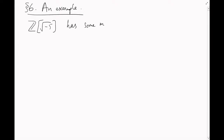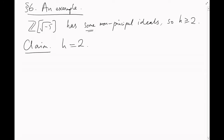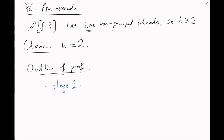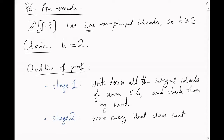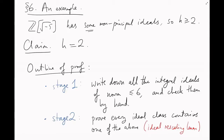Section 6: An example. We know already that Z[√(−5)] has some non-principal ideals, so it contains at least two ideal classes — principal and non-principal — but we don't know how many. I'm going to prove that there are actually only two. The proof has two stages: in the first stage I'll use what we learned in the previous video to write down all the integral ideals with small norm — let's say norm at most 6 — and check by hand which ones are in the same class. Then in the second stage I'll use a clever geometric trick to prove that every ideal class contains at least one of these ideals of norm at most 6.